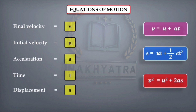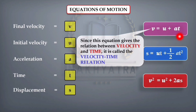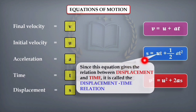These are the three equations. The first equation is called the velocity-time equation. This equation gives the relation between velocity and time — velocity is there and time is also there, so it is the velocity-time relation. The second equation gives the relation between displacement and time. S is the displacement and time is also present, so it is called the displacement-time relation.